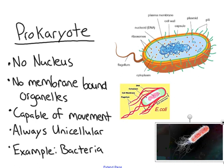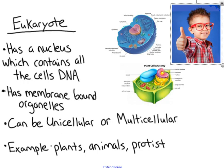We are eukaryotes — you are a eukaryote. The big difference between a prokaryote and a eukaryote is that the eukaryote has a true nucleus. The nucleus is the place where all of the DNA for that cell is contained, and that is a major difference.